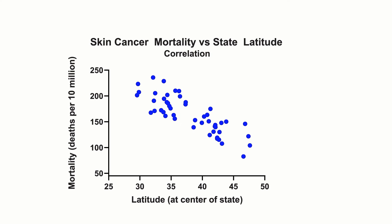Let's look at a real-world example where we use both correlation and regression. The strength of UV rays varies by latitude. The higher the latitude, the less exposure to sun. So where you live can have an impact on your skin cancer risk.